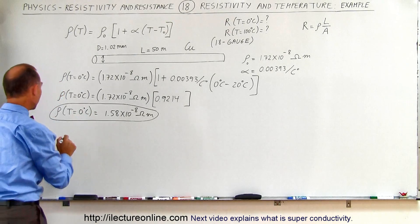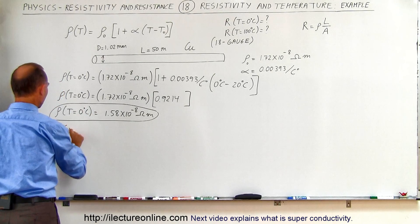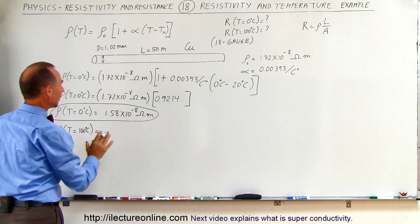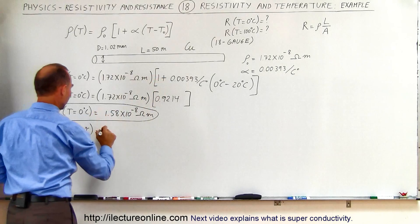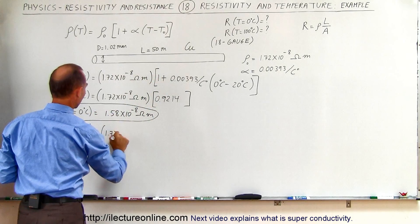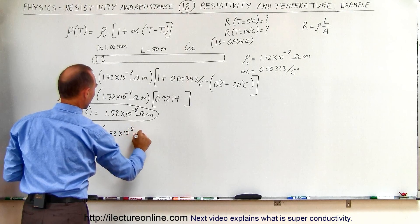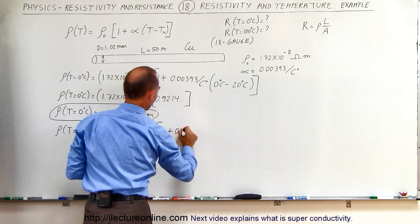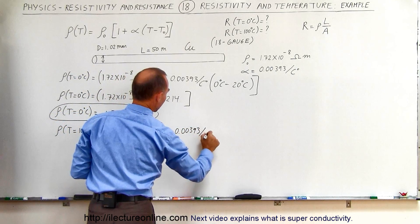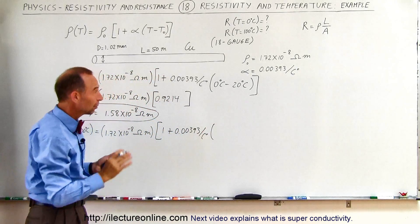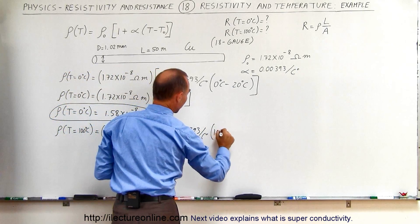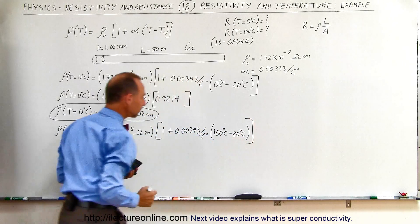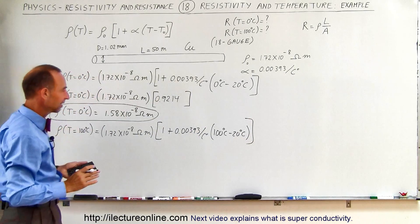Now we'll do the same thing for 100 degrees centigrade. The resistivity when temperature equals 100 degrees centigrade starts again with the base resistivity at 20 degrees centigrade: 1.72 times 10 to the minus 8 ohm-meters, times 1 plus 0.00393 per centigrade degree, times the temperature difference. Notice this will be a positive quantity — 100 degrees minus 20 degrees centigrade — giving a positive 80.